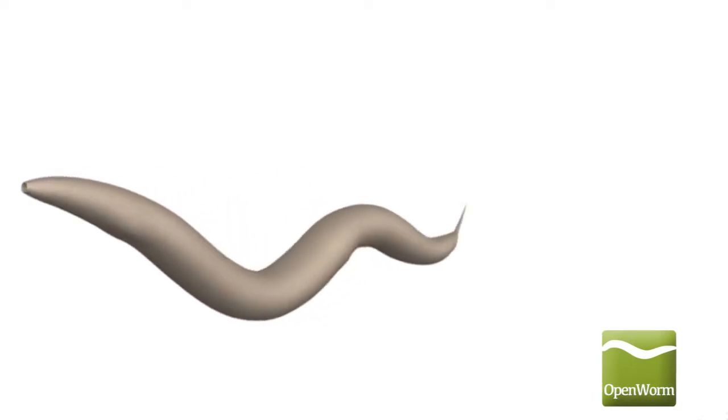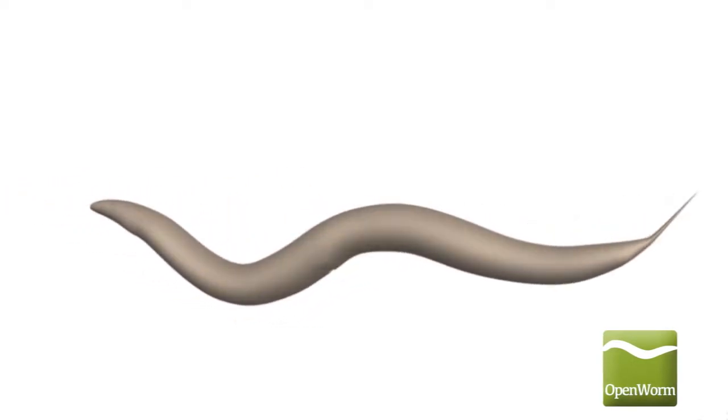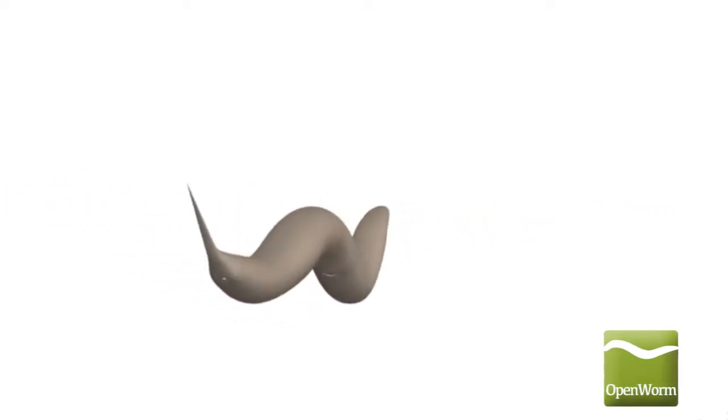C. elegans is a microscopic roundworm, also known as a nematode, that is 1 mm long.